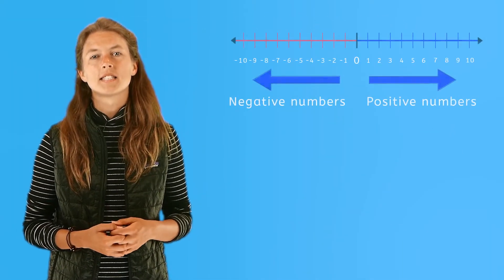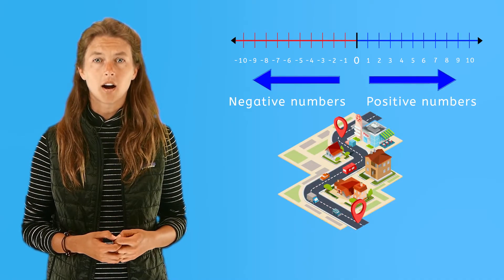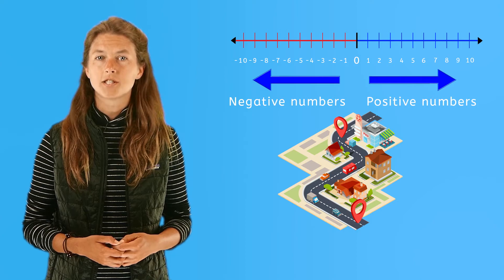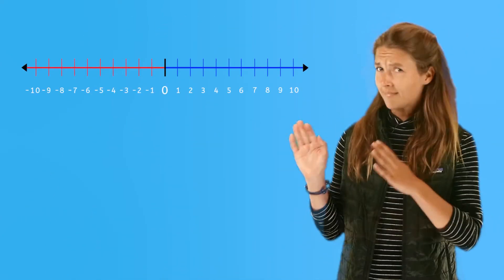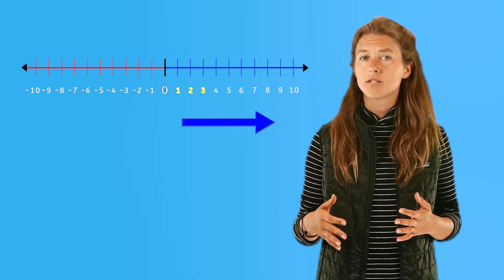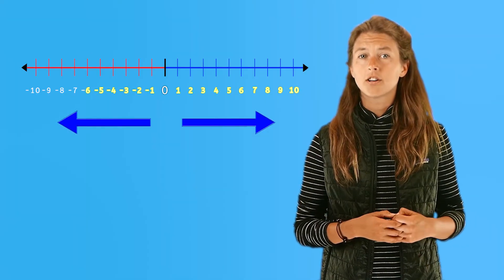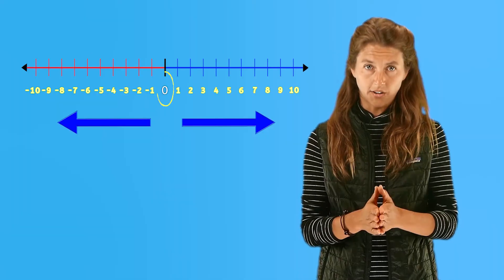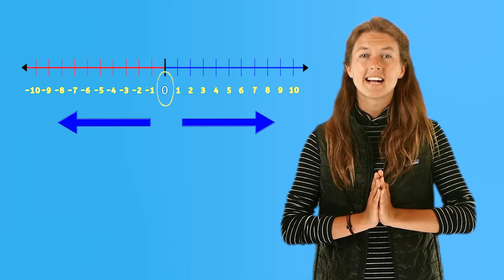We can use the number line to subtract negative integers very much like using a map to know where we are, where we need to go, and where our destination is when taking a trip. Look at this number line. It shows us how integers moving to the right increase or go up in value, and how integers moving to the left decrease or go down in value. We will always start at zero.